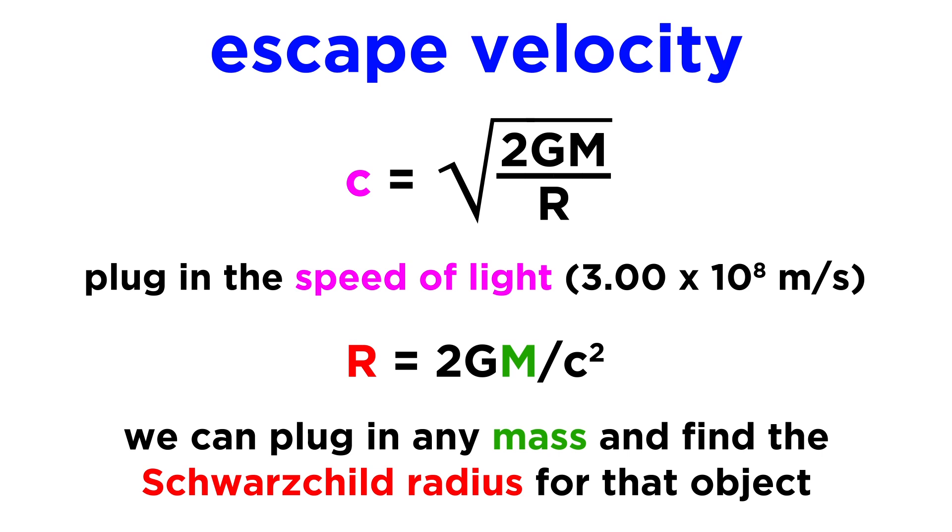In order to generate a black hole. This is called the Schwarzschild radius of an object.